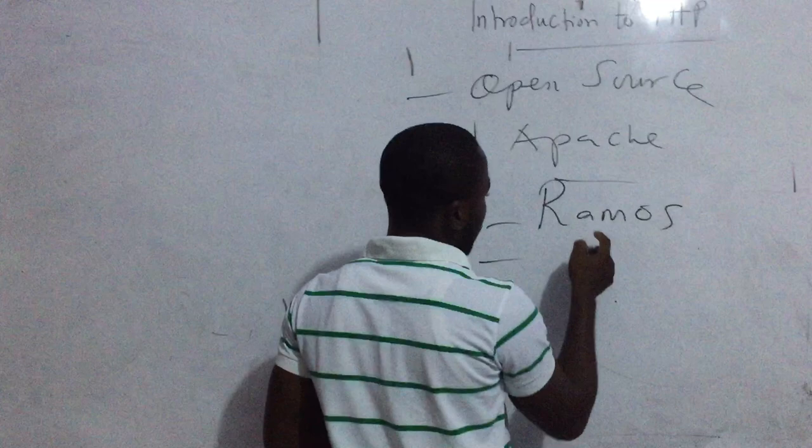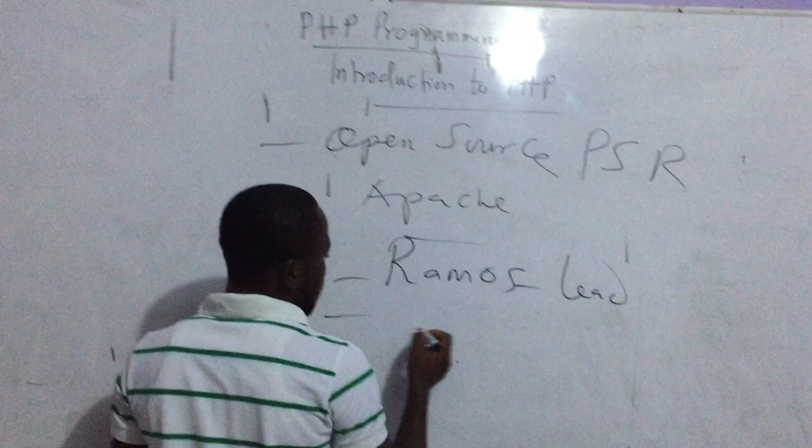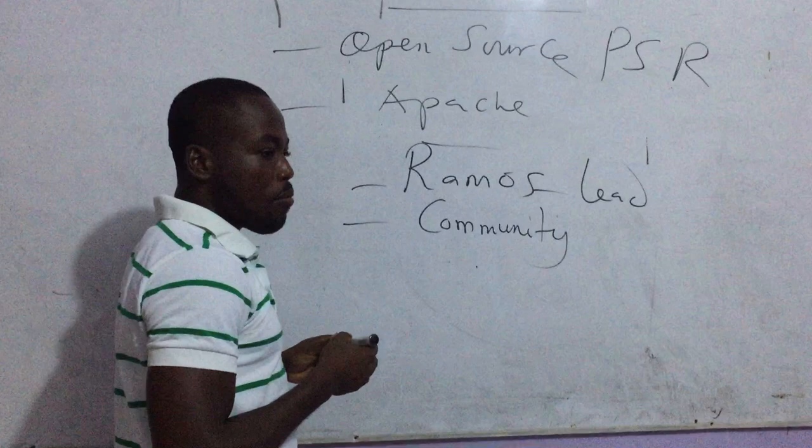The PHP Specification Requirement, PSR, is generated by the lead — the one who designed the language — plus the community. PHP is open source because there is no proprietary company that specifically owns this language.